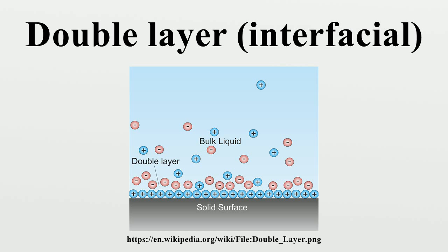Below the electrolyte's decomposition voltage, the stored charge is linearly dependent on the voltage applied. This early model predicted a constant differential capacitance independent from the charge density, depending on the dielectric constant of the electrolyte's solvent and the thickness of the double layer. This model, with a good foundation for the description of the interface, does not consider important factors including diffusion and mixing of ions in solution.